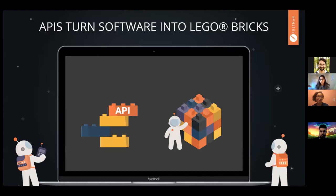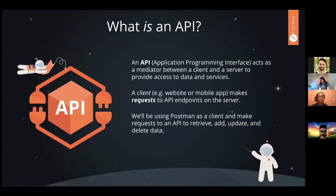An API is a mediator between a client and a server to provide access to data and services. A client can be anything from a website to a mobile app to your web browser, and the client makes requests to API endpoints on the server. We're going to be using Postman as a client today, and we're going to make requests and retrieve, add, update, and delete data all in one workshop.